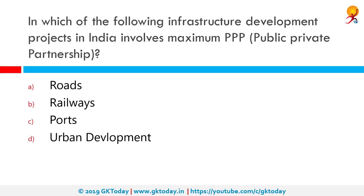In which infrastructure development project in India is maximum public-private partnership involved? That would be roadways. Public-private partnerships are typically found in transport infrastructure such as highways, airports, railroads, bridges, and tunnels. Examples of municipal and environmental infrastructure include water and wastewater facilities.